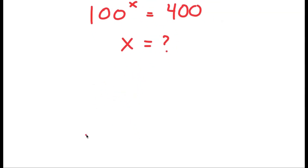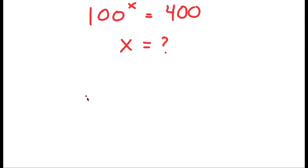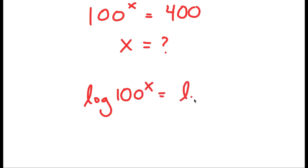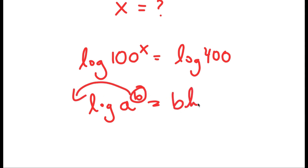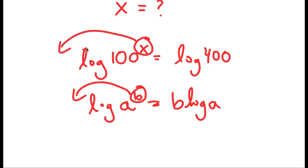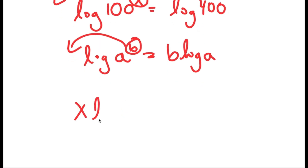To solve this I'm going to use logarithms. I'll start by taking the log on both sides: log of 100 to the power of x is equal to log 400. If I have something in the form log a to the power of b, I can move b to the front to get b times log a. So I get x times log 100 is equal to log 400.